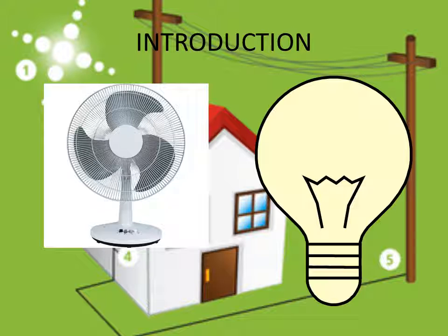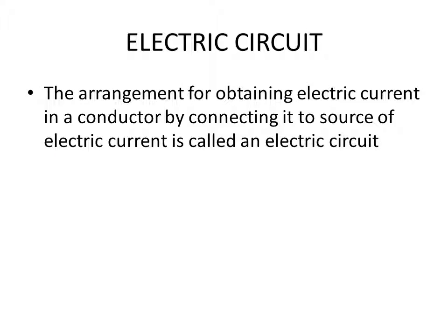Regarding the working of an electrical appliance: when put in use, an appliance is connected by an electric wire to a plug. When we want to use it, the plug is inserted in the socket and the switch is turned on. When we want the appliance to stop working, we put the switch in the off position.